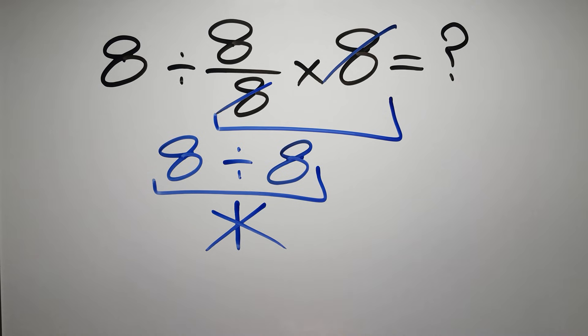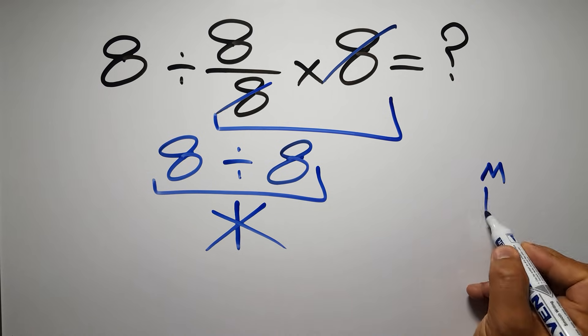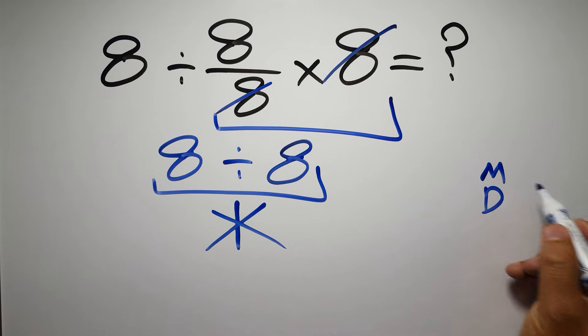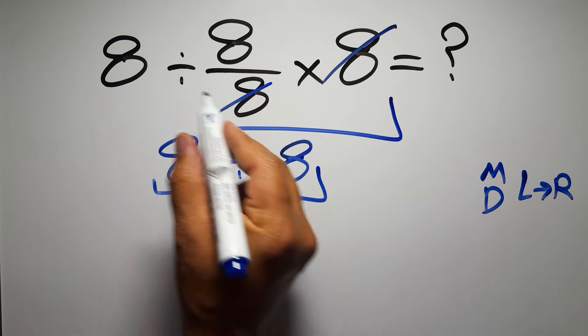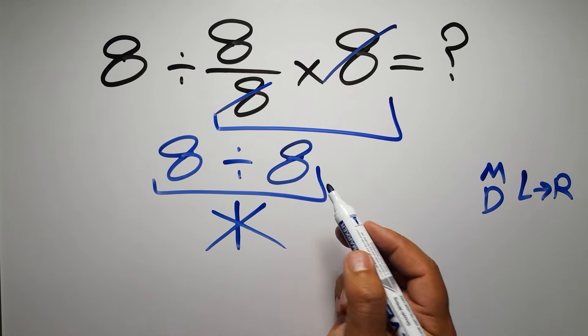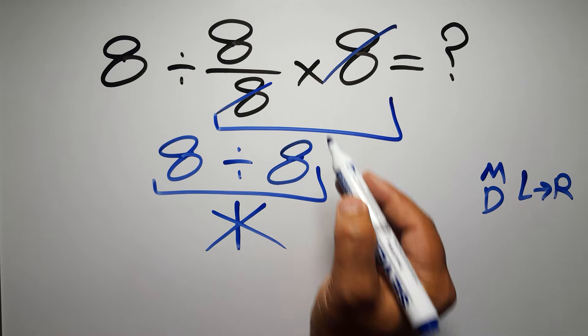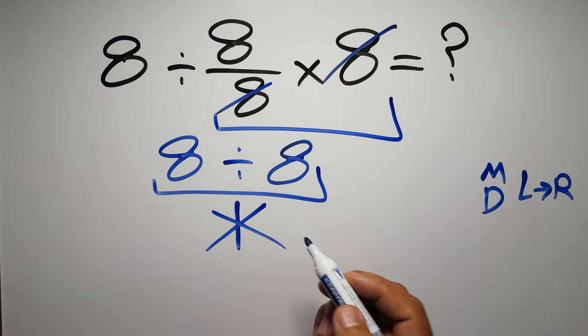Because according to the order of operations, multiplication and division have equal priority, and we have to work from left to right. So here, first we have to do this division, then this multiplication. If we do this multiplication before this division, it is wrong.